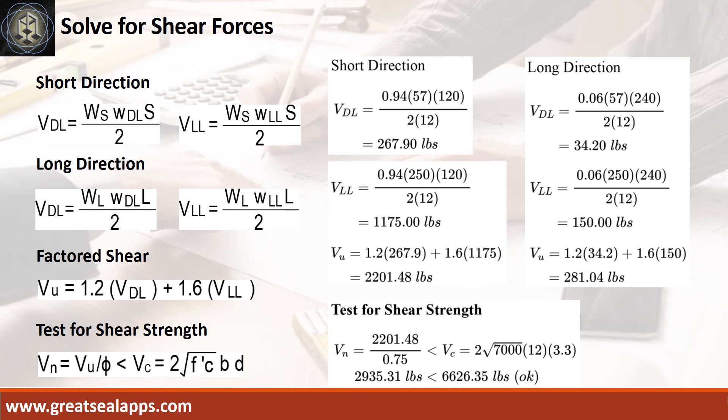At short direction, the shear force for dead load is 267.9 pounds and live load is 1,175 pounds, for a maximum shear force of 2,201.48 pounds. At long direction, the shear force for dead load is 34.2 pounds and live load is 150 pounds, for a maximum shear force of 281.04 pounds. The nominal shear force is 2,935.31 pounds, which is less than 6,626.35 pounds — the slab passes the shear check.